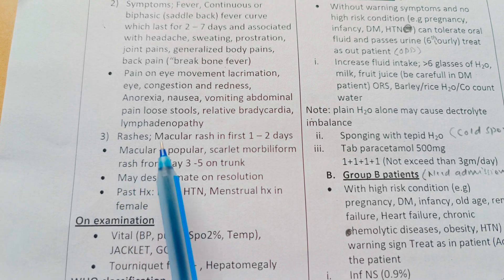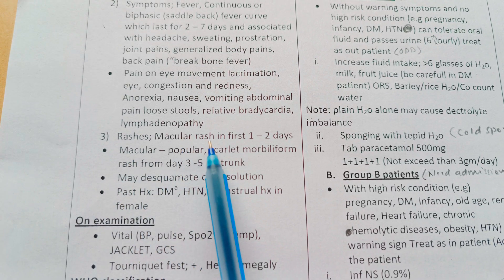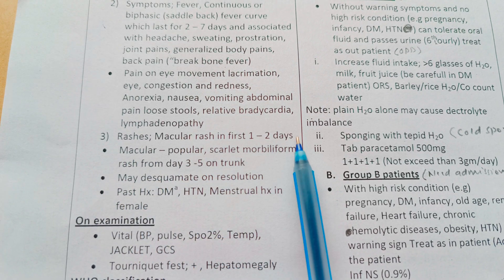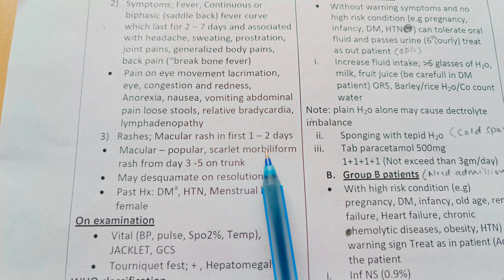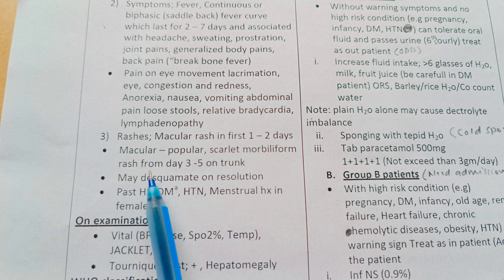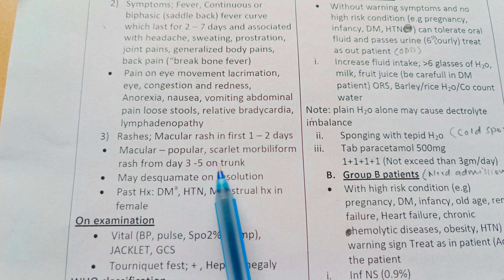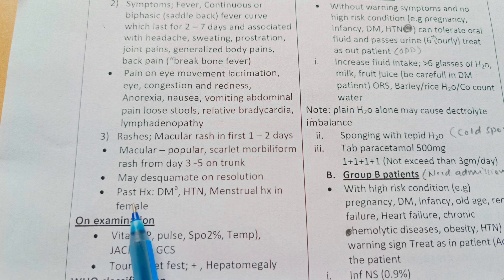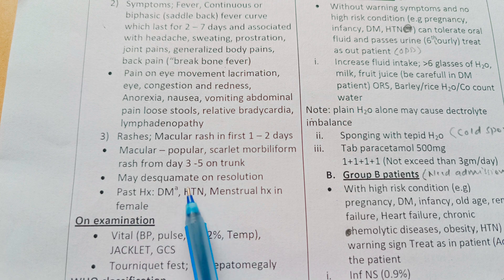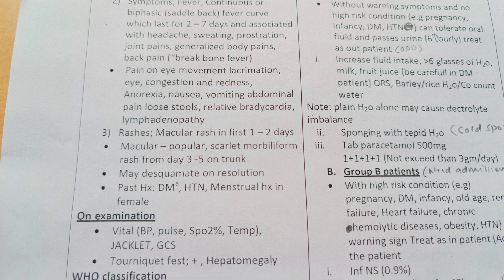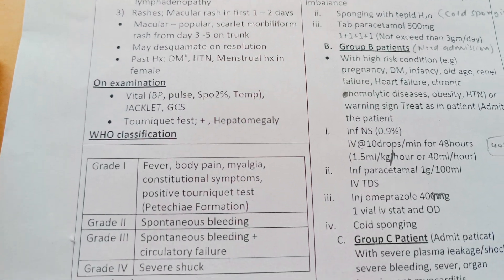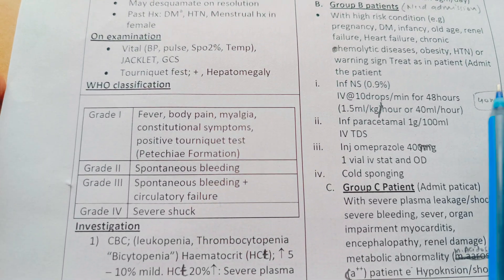Rashes include a macular rash in the first one to two days, then a maculopapular scarlet morbilliform rash from day three to five on the trunk, which may desquamate on resolution. Take past history for diabetes, hypertension, and menstrual history in females.